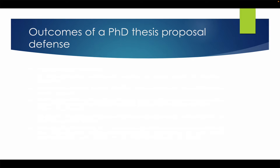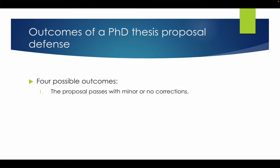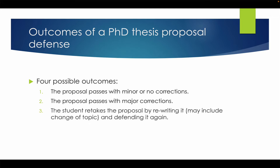There are four key outcomes of a PhD thesis proposal defense. The first is the proposal passes with minor or no corrections. The second is that the proposal passes with major corrections. The third is that the student retakes the proposal by rewriting it, which may include a change of topic and defending it again. The fourth possible outcome is that the proposal is rejected altogether.